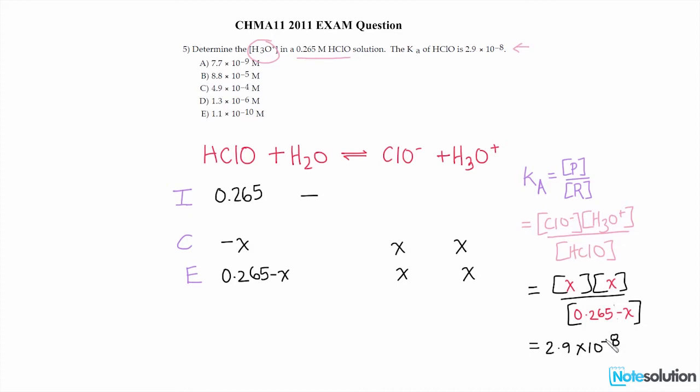And so at this point, it helps to round off our denominator to 0.265. But bear in mind that this estimation will only work if the concentration of x is significantly less than 0.265.